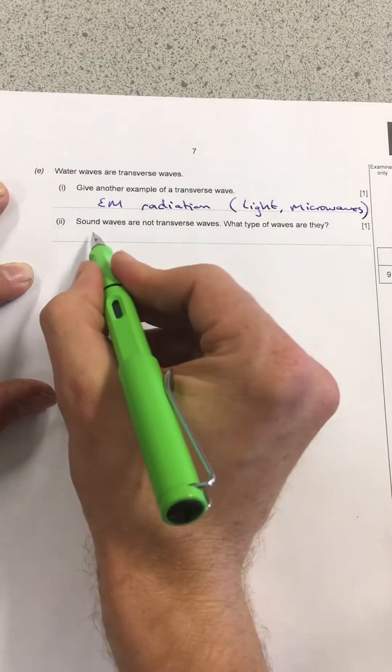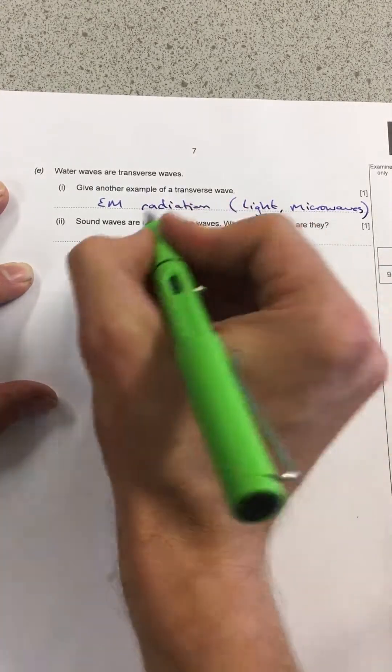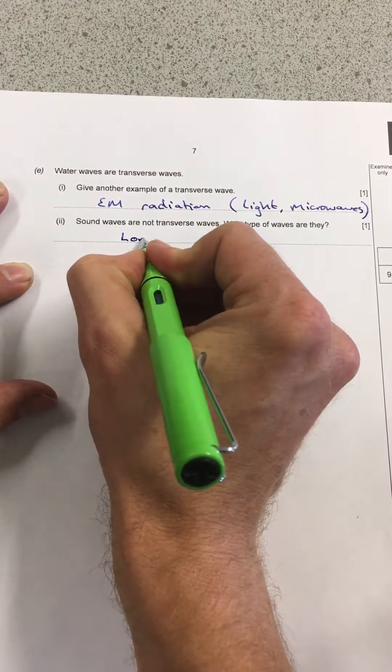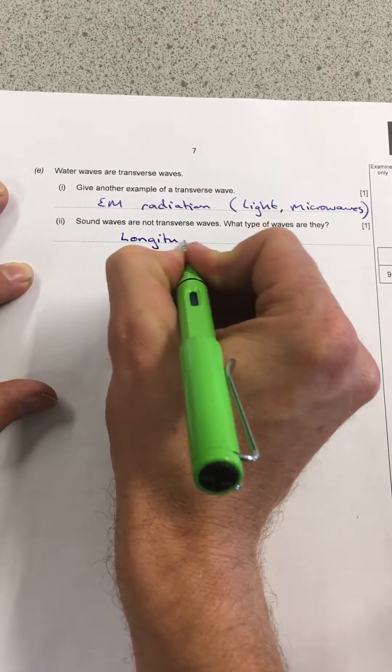And then finally, it says sound waves are not transverse. What are they? Well, they must be the opposite then. So they must be longitudinal.